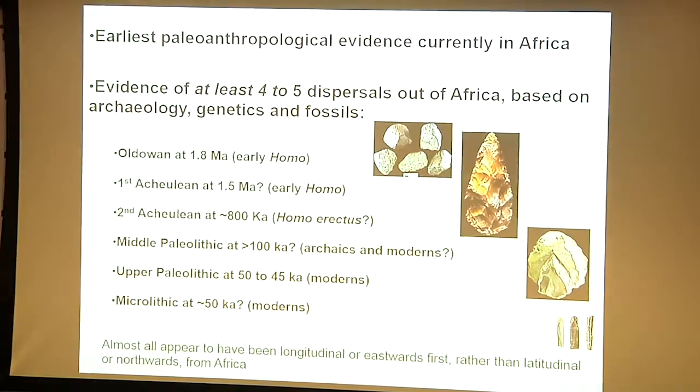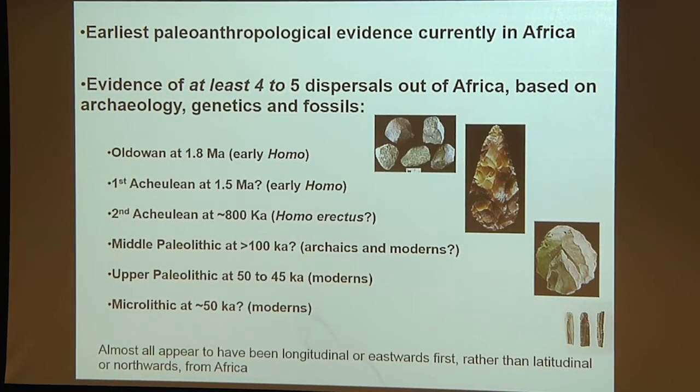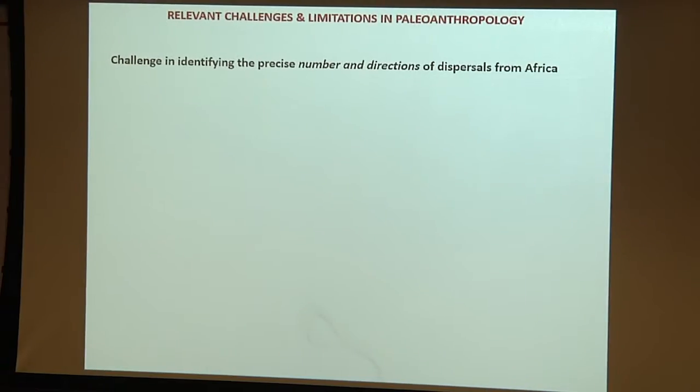Looking at a broad perspective, the oldest prehistoric evidence is currently in Africa, but we have several dispersals happening from roughly two million years onwards. Each of these dispersals is associated with different hominid species and different technologies, ranging from Oldowan at 1.8 million up to microlithic at 50,000. This is based on genetic evidence, archaeological evidence, and some sites with preserved fossil hominid evidence. The challenge is identifying the number of dispersals and also looking at genetic studies of modern tribals — hunter-gatherers and foragers — though this only tells us the history of modern populations, not extinct ones or biological dead ends.